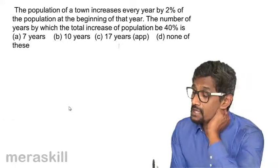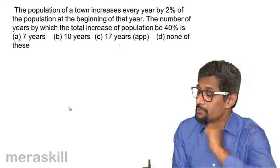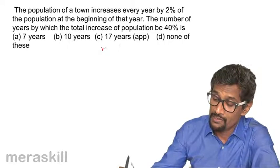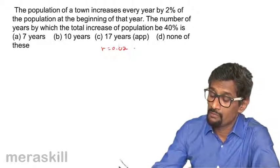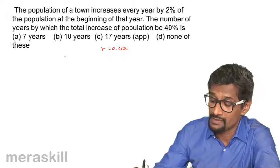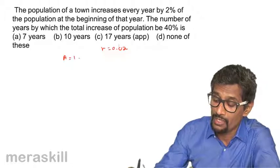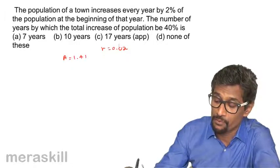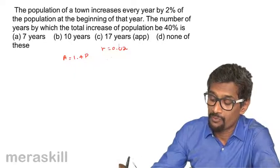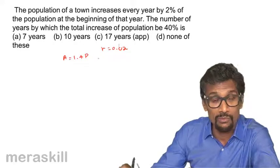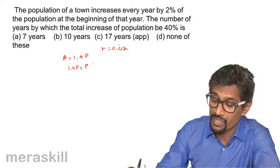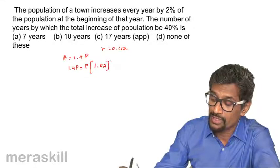The population of a town increases every year by 2%. The number of years by which the total increase of population is 40%: that means A is going to be 1 plus 40% of it, that is 1.4 times P, or 140% of the original population, which is 1.4P. So 1.4P equals P into 1.02 raised to N, and this gets cancelled.